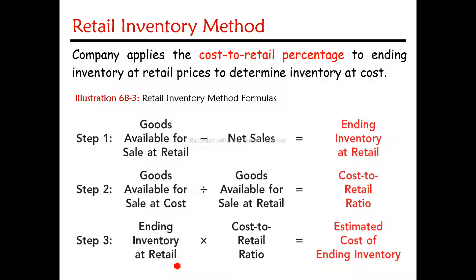The retail inventory method: companies apply the cost-to-retail percentage to ending inventory at retail price to determine inventory at cost. The cost of goods available for sale at retail minus cost of goods gives the retail figure.